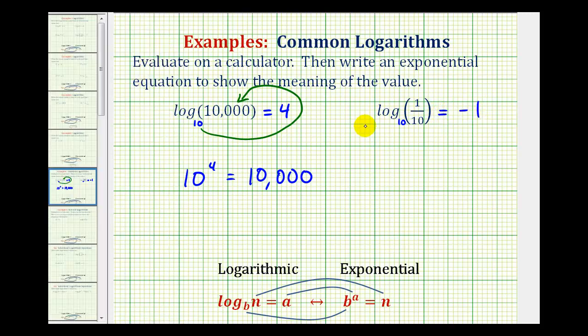And again, to show why this is equal to negative one, we can add an exponential equation. So we'd have the base 10 raised to the negative one power is equal to the number one-tenth. Again, this emphasizes when we determine the value of a logarithm, we're actually finding an exponent. And in this case, 10 to the negative one power is equal to one-tenth.